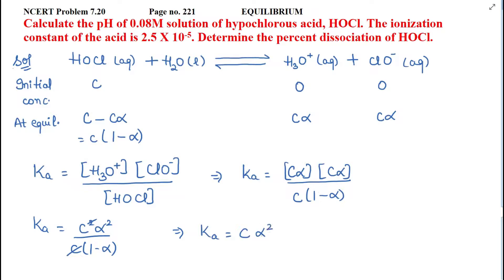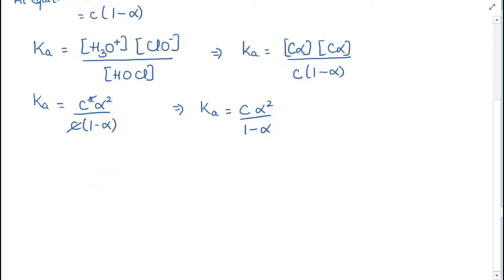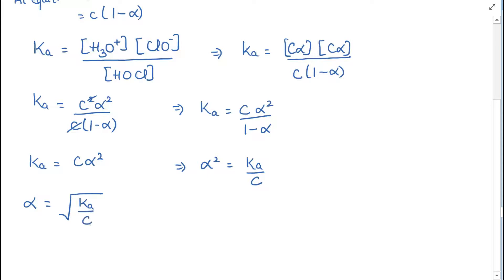Now we put in values. The dissociation constant is very low — 2.5 into 10 raise to power minus 5 — which means dissociation is very low. Since dissociation is very low, we can ignore alpha in the denominator. So Ka equals C·alpha squared, which gives alpha squared equals Ka divided by C.